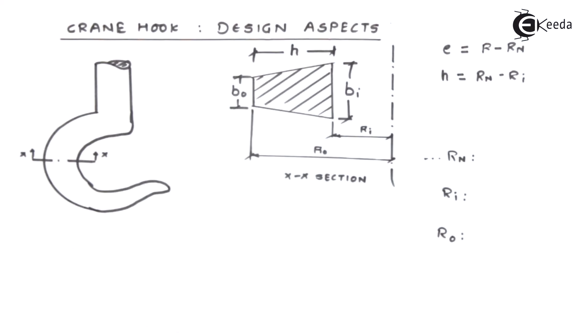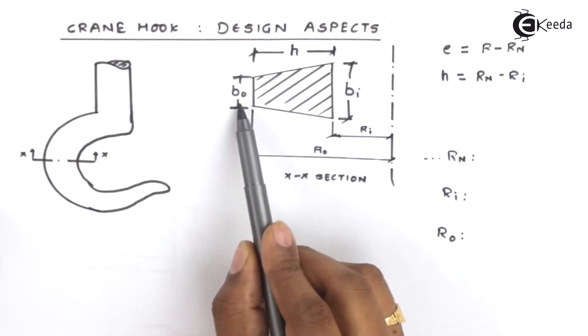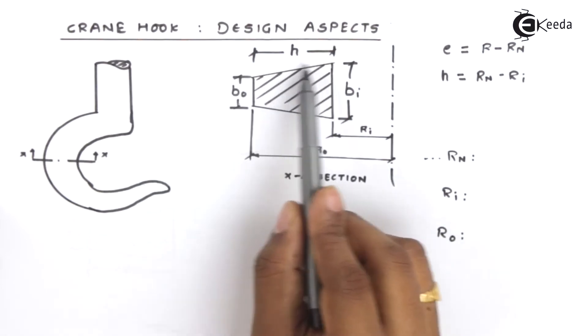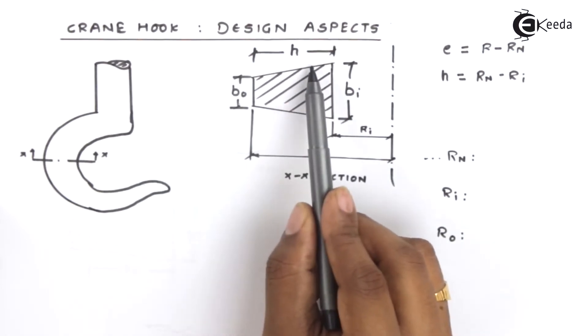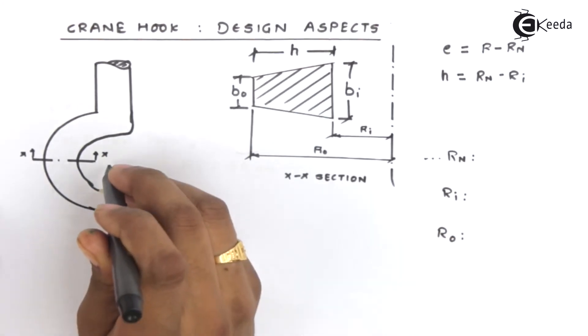So such a cross section we have considered for example for the understanding purpose which is a trapezoid. Let us understand a nomenclature which is very simple. The larger width, the smaller width and the distance between them is the h. Thereafter there goes an axis. Now let me explain that axis.